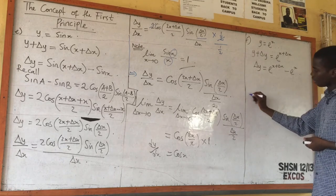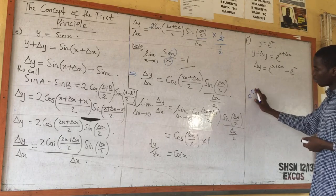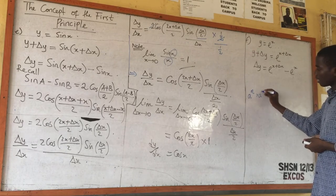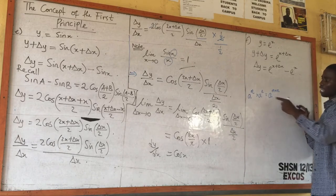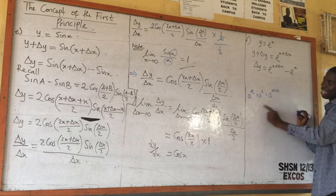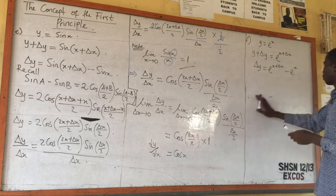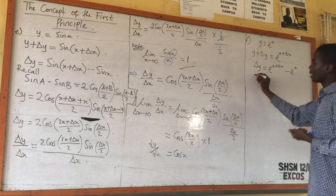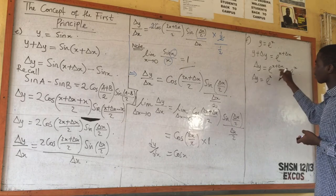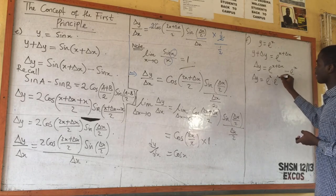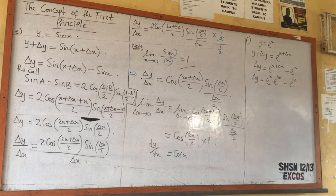Don't forget from the law of indices: when a raised power m is multiplied by a raised power n, it is a raised power m plus n. So similarly, when I have a raised power m plus n, I can write it as a raised power m multiplied by a raised power n. So delta y will be equal to e raised power s multiplied by e raised power delta s, minus exponential s.